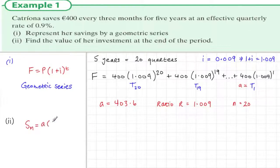Now the sum of a geometric series formula is a times 1 minus r to the power of n divided by 1 minus r.